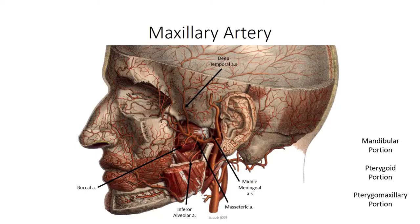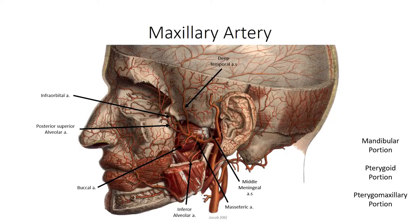The pterygomaxillary portion is the terminal segment of the maxillary artery, which projects into the pterygopalatine fossa. The posterior superior alveolar artery pierces the posterior surface of the maxilla, then divides into numerous branches that supply the molars and premolars, as well as the posterior aspect of the maxillary sinus. The infraorbital artery courses through the infraorbital foramen, where it supplies the superior portion of the maxillary sinus, as well as the inferior portion of the orbit. It then continues anteriorly, dividing into middle and anterior superior alveolar arteries that supply the anterior upper dentition. The descending palatine artery projects inferiorly, where it splits into greater and lesser palatine branches that enter the roof of the oral cavity to supply the hard and soft palate respectively.